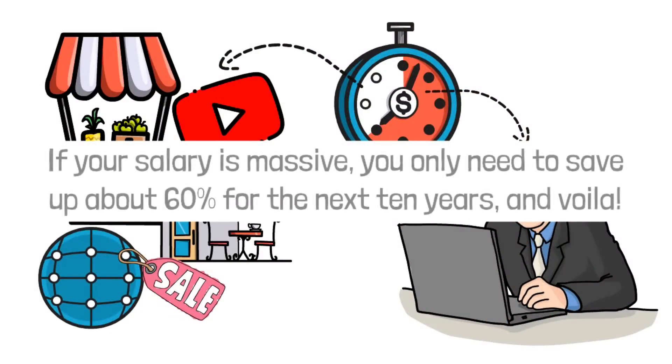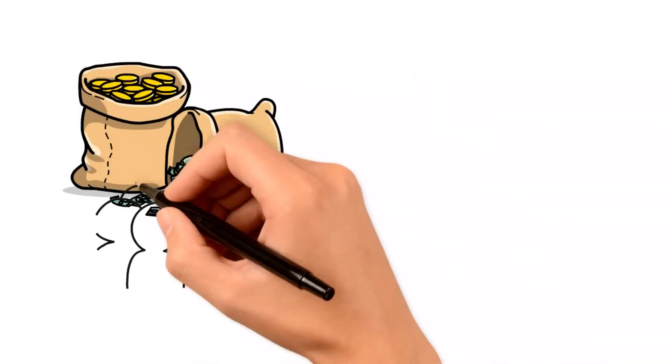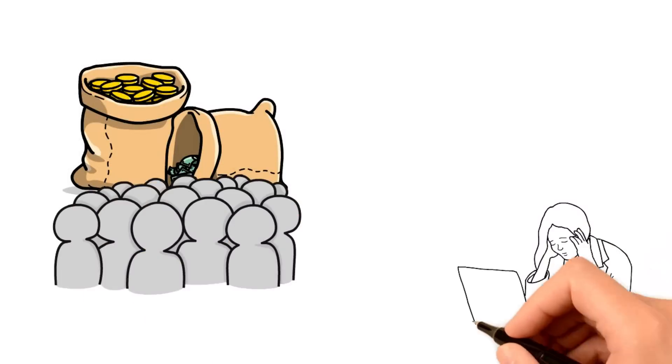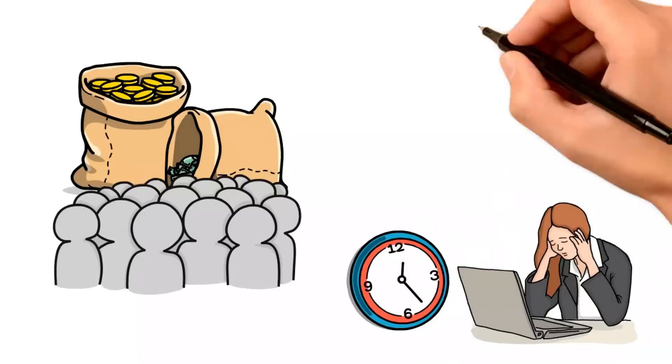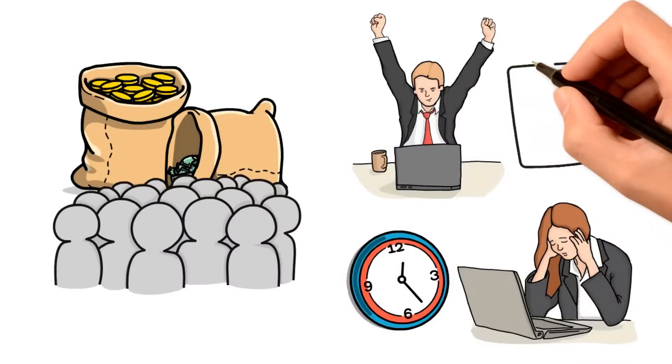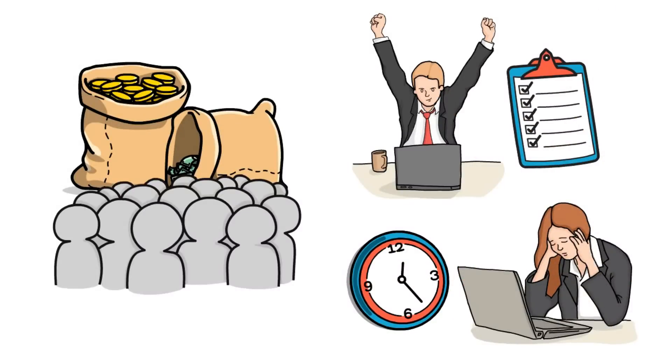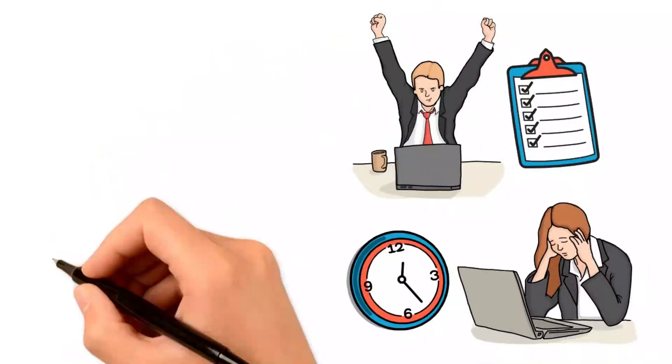However, if your salary is massive, you only need to save about 60% for the next 10 years. And voila, you're financially set for life. If you're not in the rich gang or the million dollar job category, I advise that you get a job that pays you based on your results and not based on your time. In other words, find a way to earn an income, not a salary.